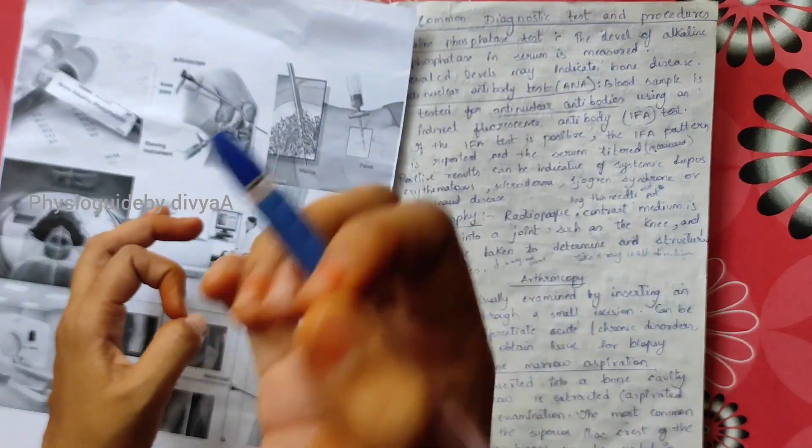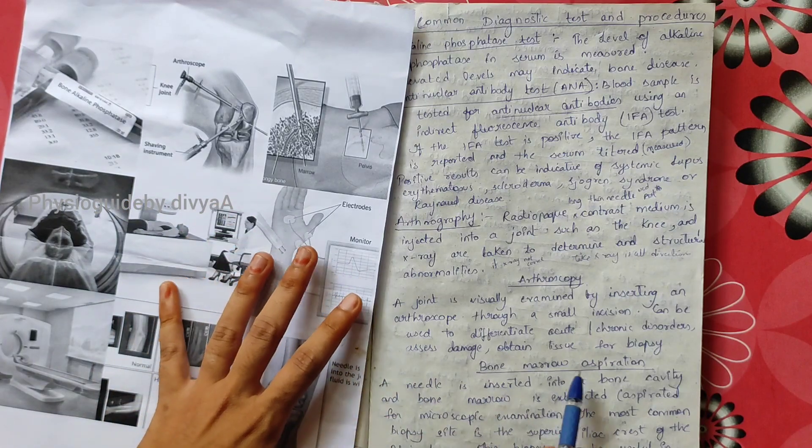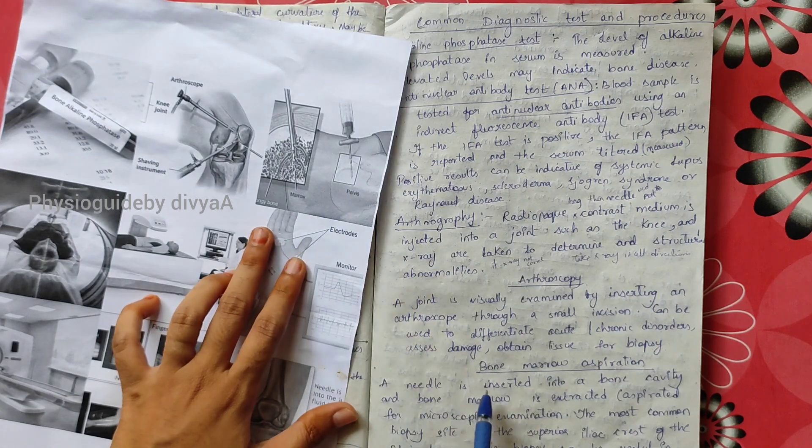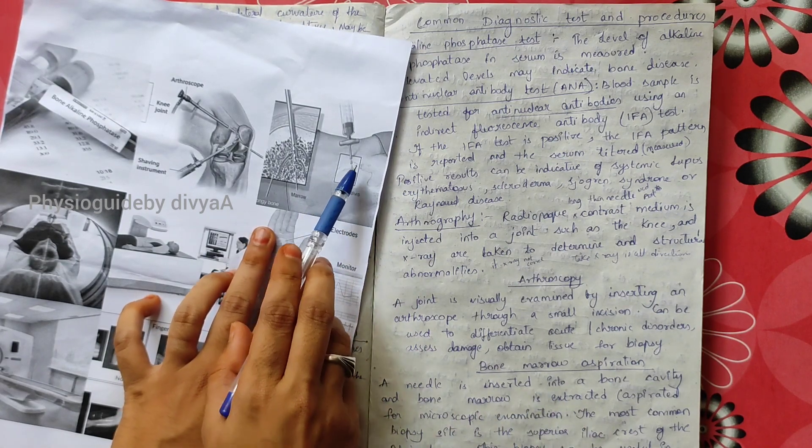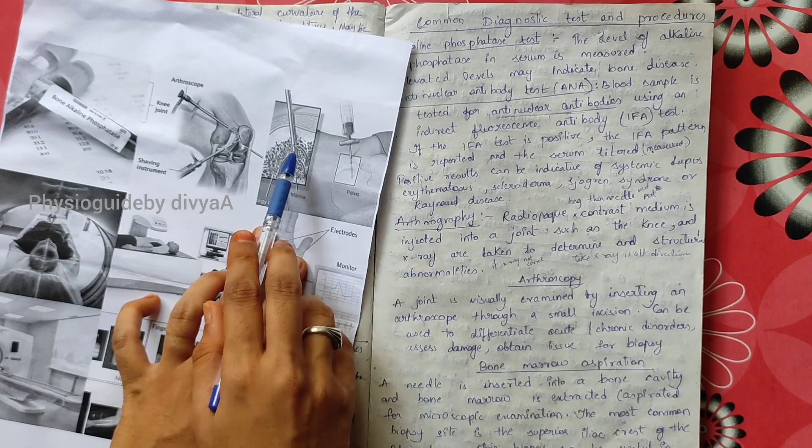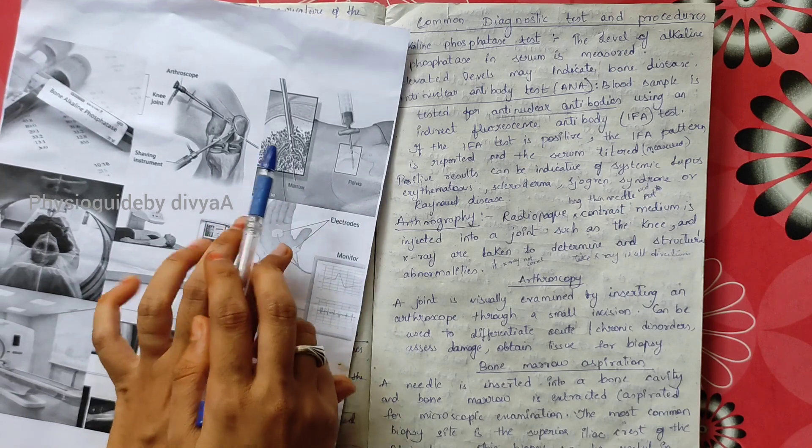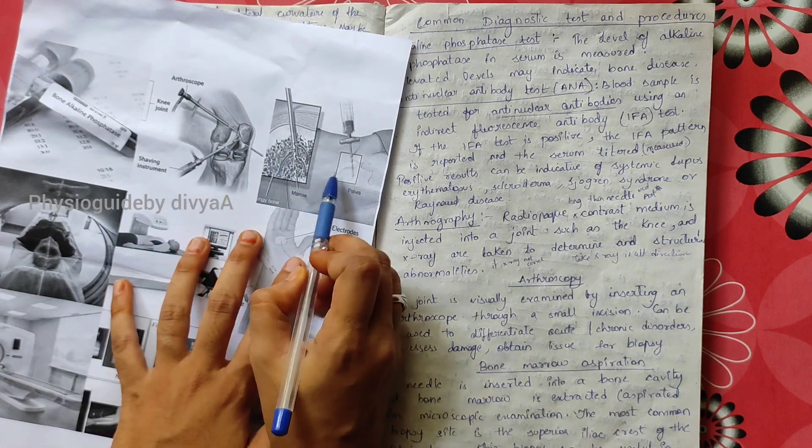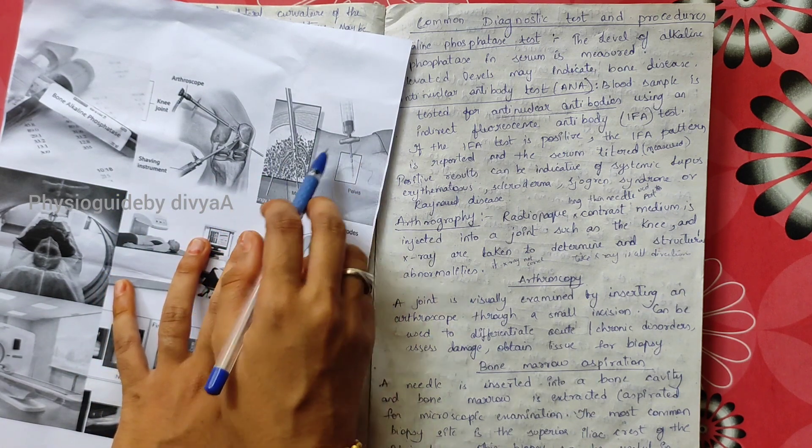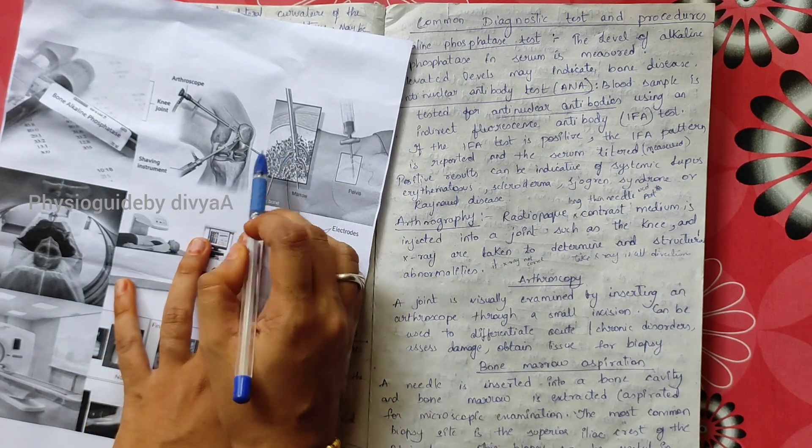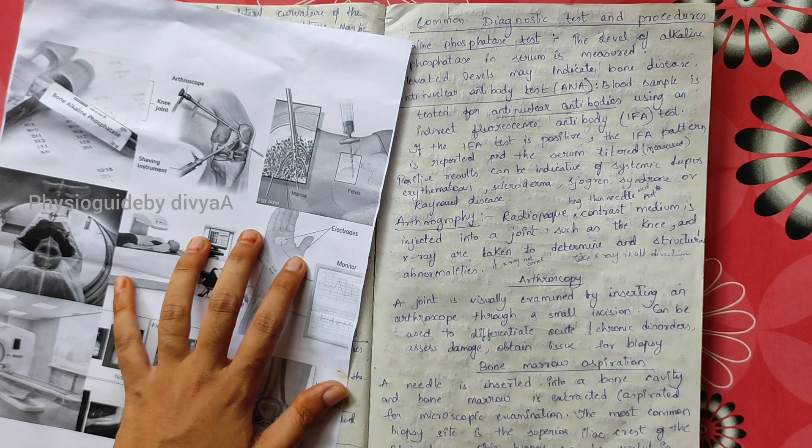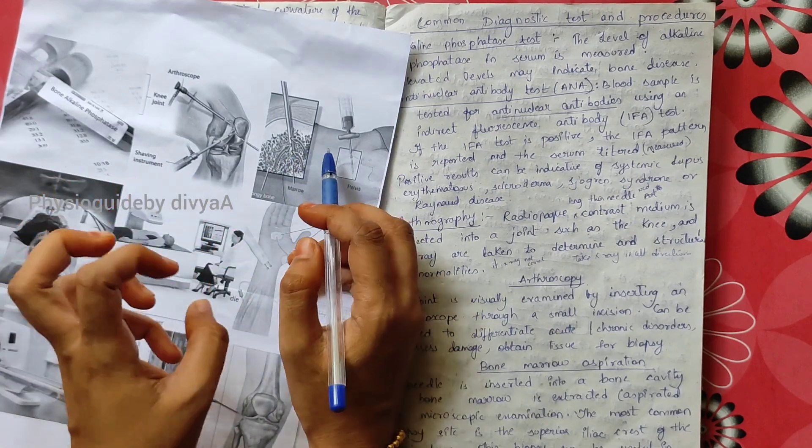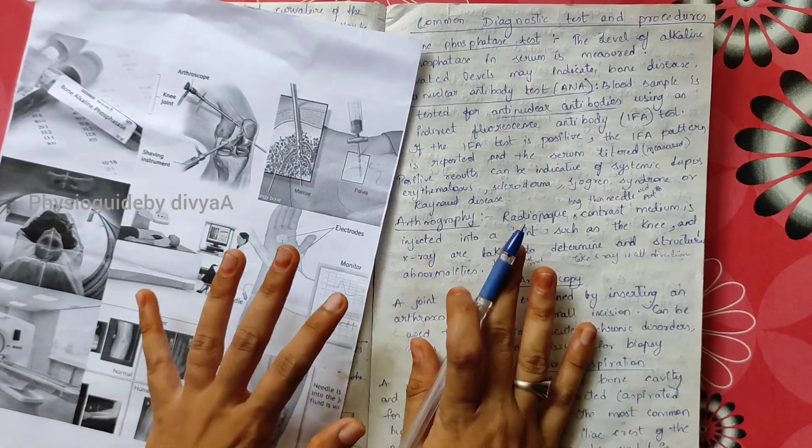Bone marrow aspiration: a needle is inserted into the bone cavity and bone marrow is aspirated for microscopic examination. The most common biopsy site is the posterior superior iliac crest of the pelvic bone. This biopsy is useful in evaluating various malignancies, tumors, cancers, blood disorders, and infections.